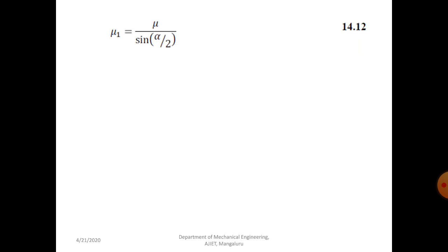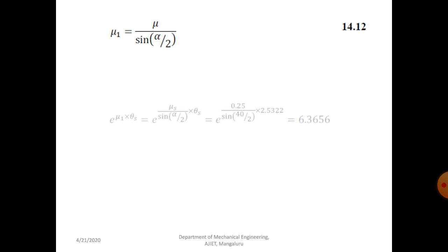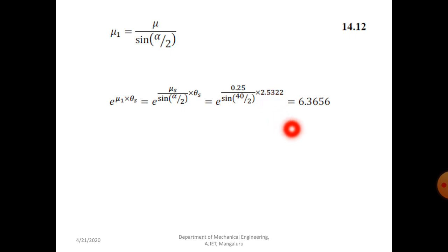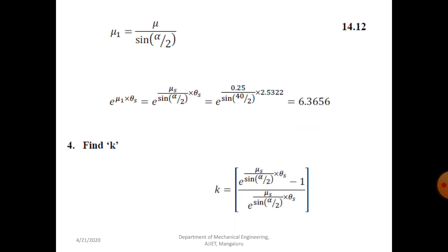Now calculate mu1, the apparent coefficient of friction, using mu1 = mu / sin(alpha/2). This is one of the important changes in V-belt drive — instead of normal coefficient of friction, we use apparent coefficient of friction. Alpha is always substituted in degrees. The alpha range is usually from 30 to 40 degrees. After substituting all values, we get e^(mu1*theta_s) = 6.3656.